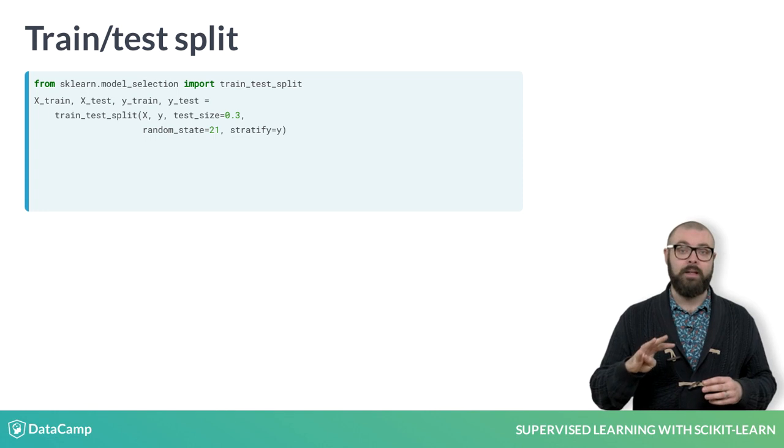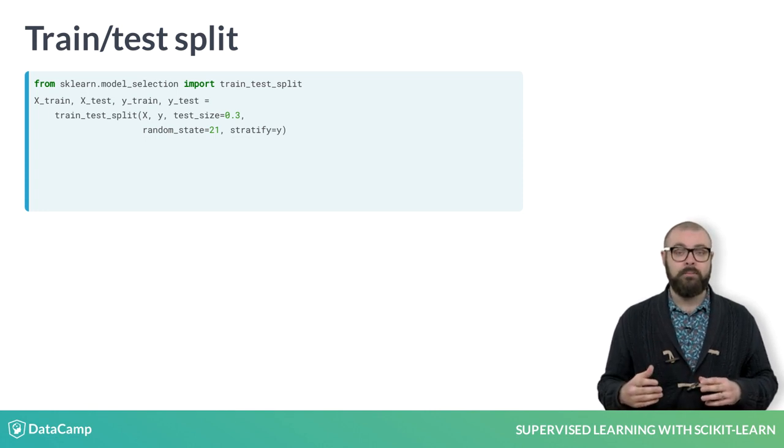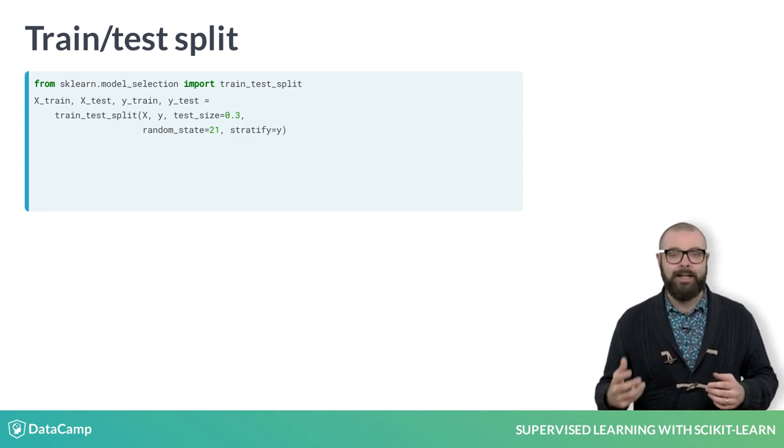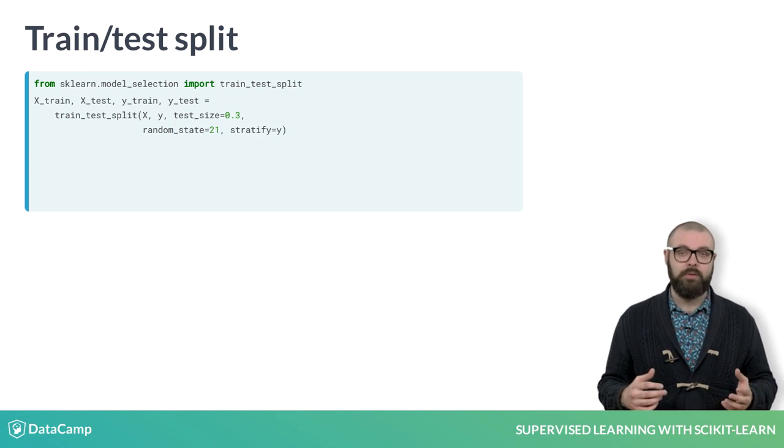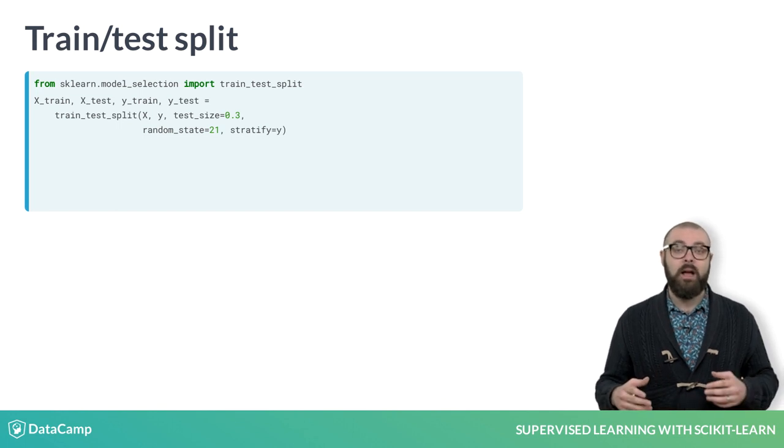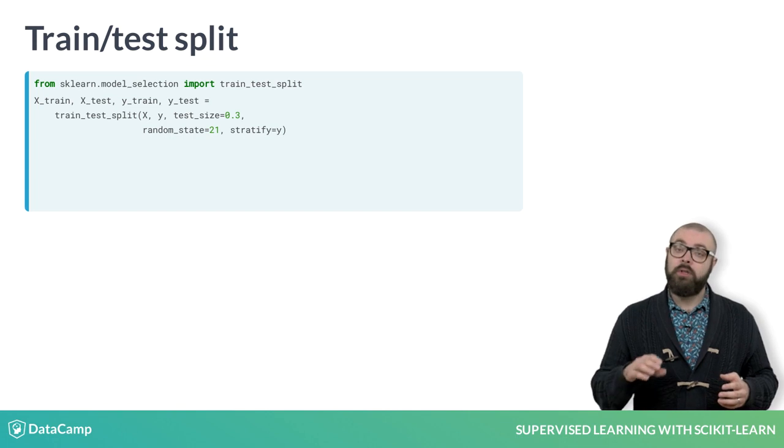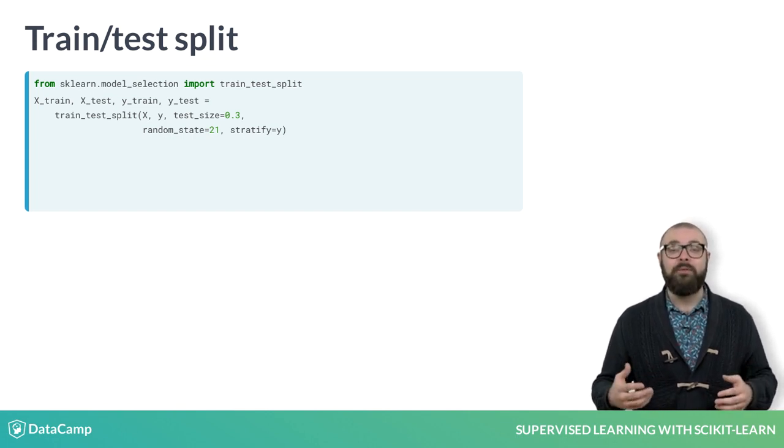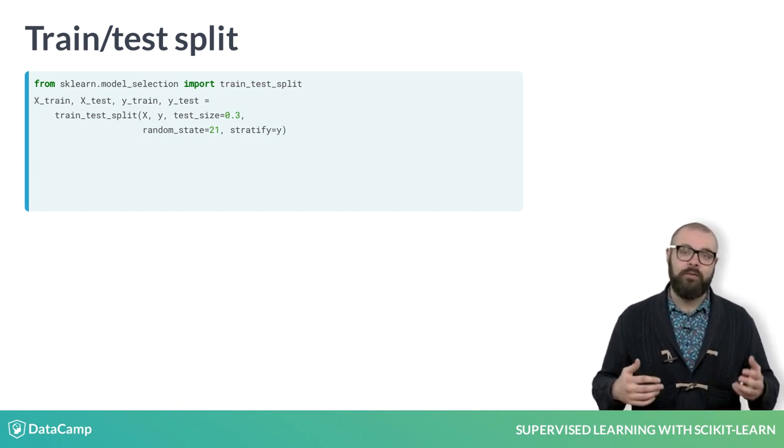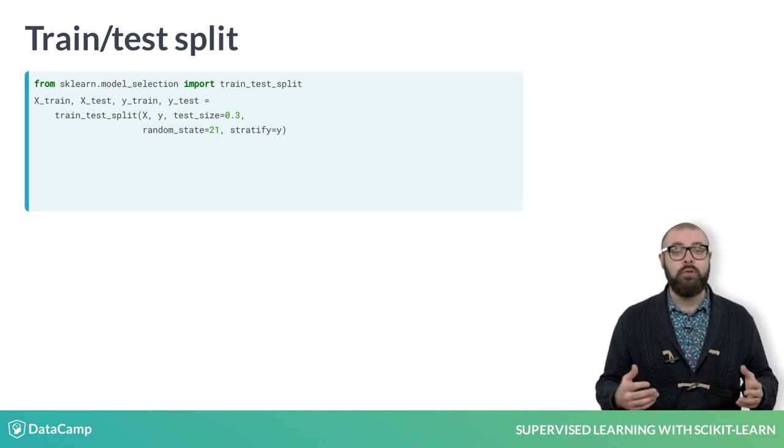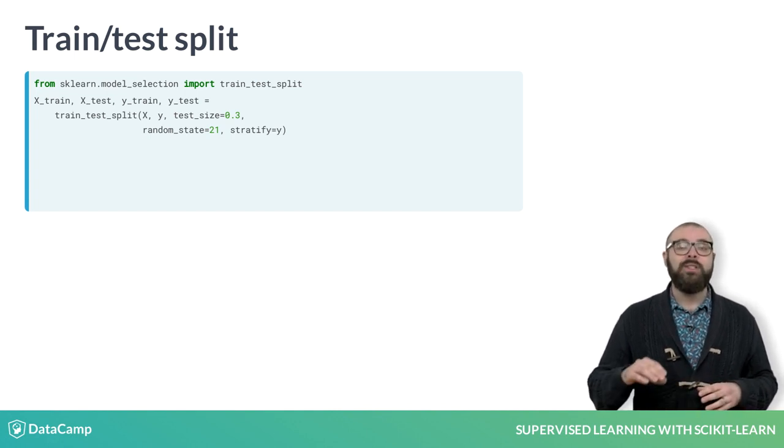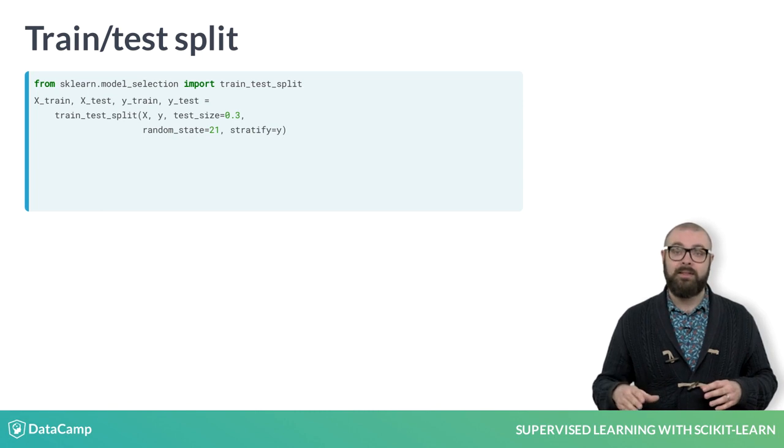train_test_split returns four arrays: the training data, the test data, the training labels and the test labels. We unpack these into four variables: X_train, X_test, y_train and y_test respectively. By default, train_test_split splits the data into 75% training data and 25% test data, which is a good rule of thumb. We specify the size of the test set using the keyword argument test_size.